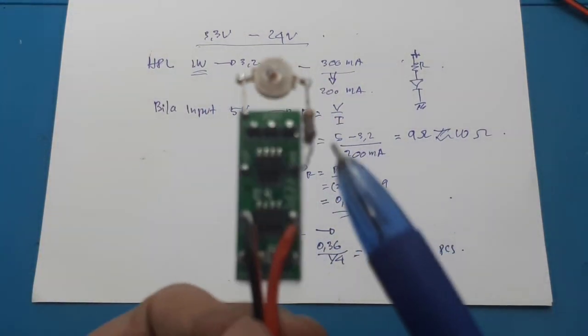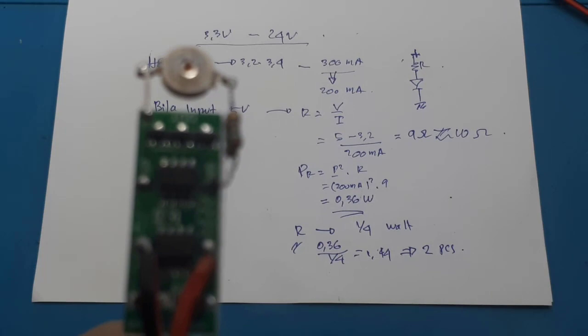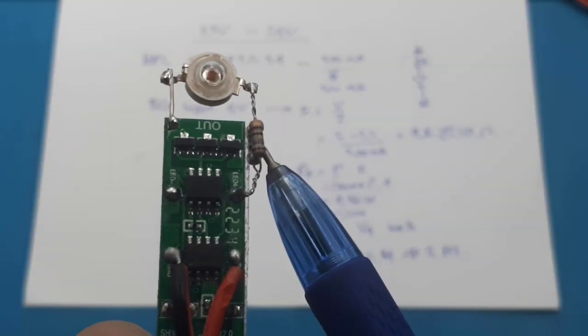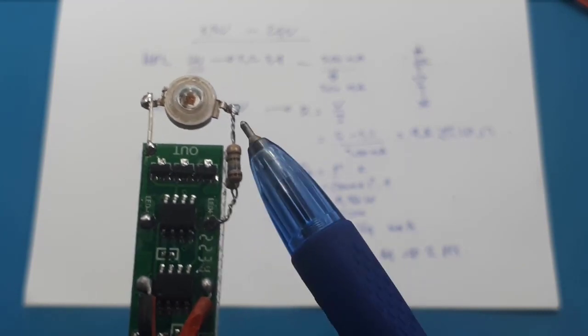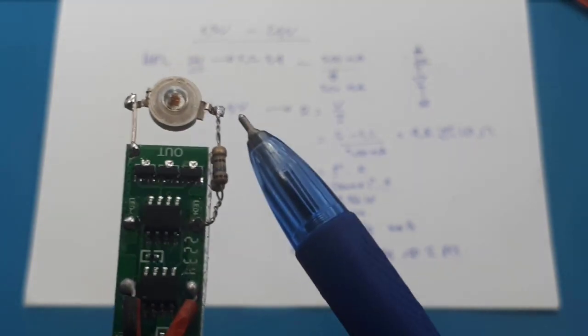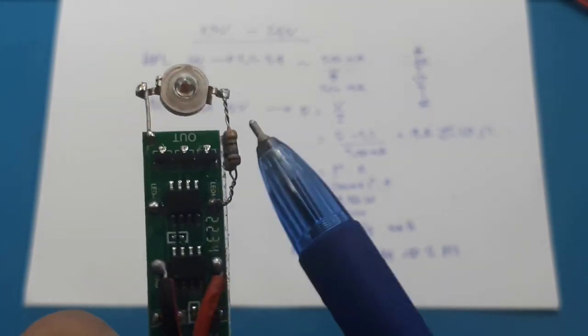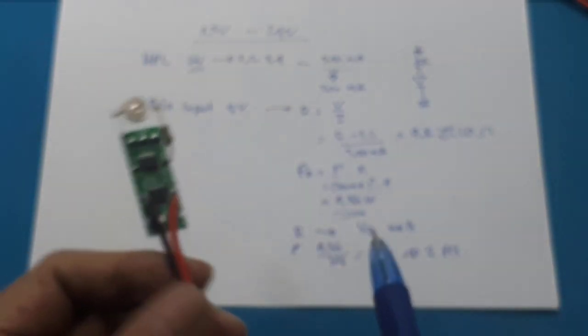Sudah saya pasang R-nya, terlihat 18 ohm saya paralel agar mendapatkan 9 ohm. Ini positifnya kemudian ini negatifnya. Saya coba saja.